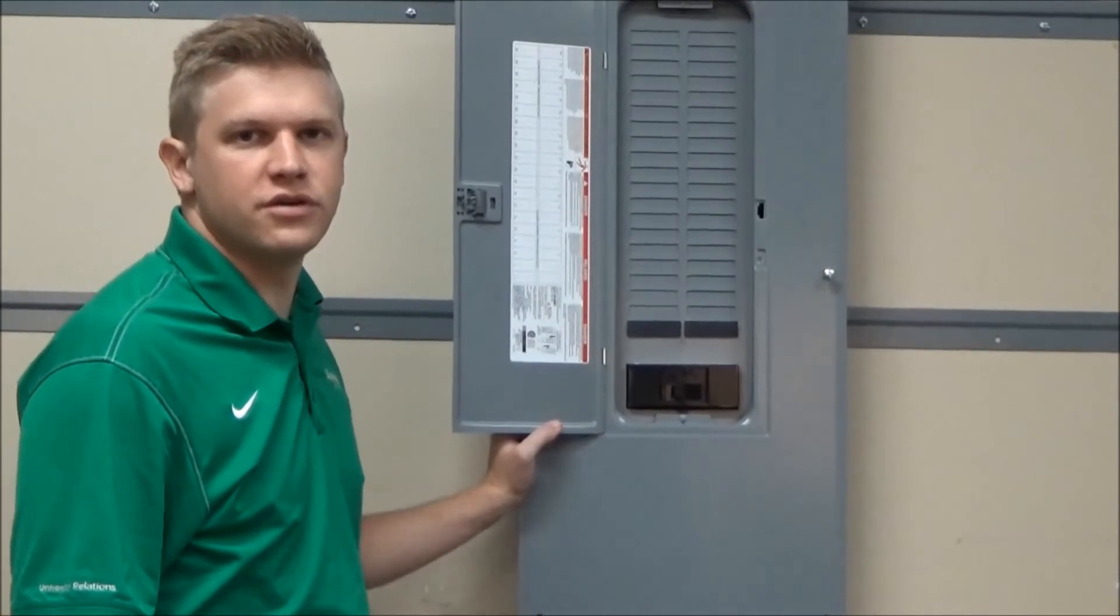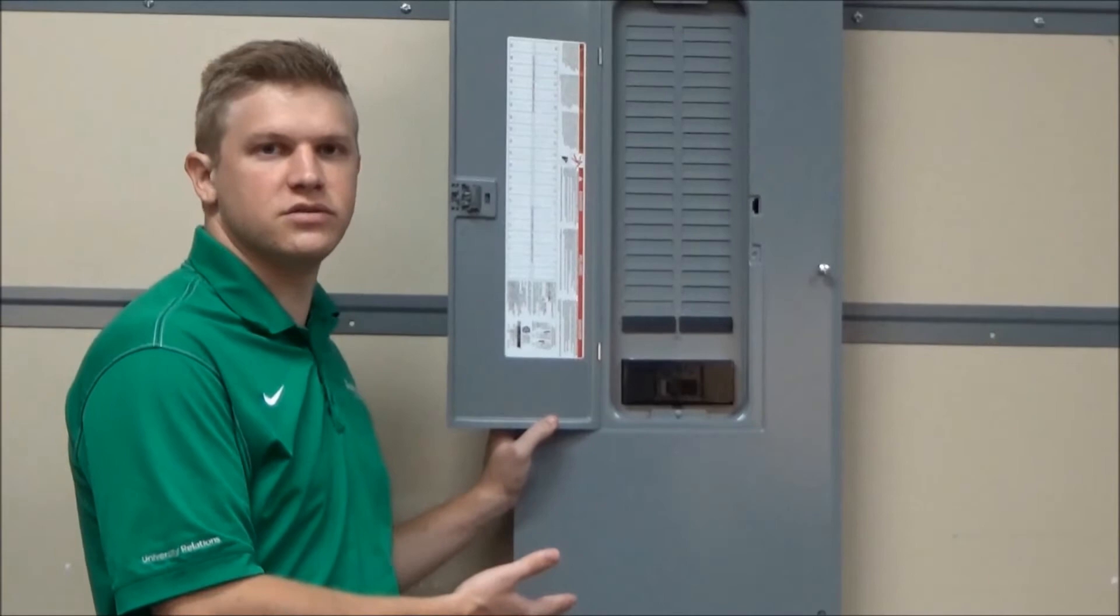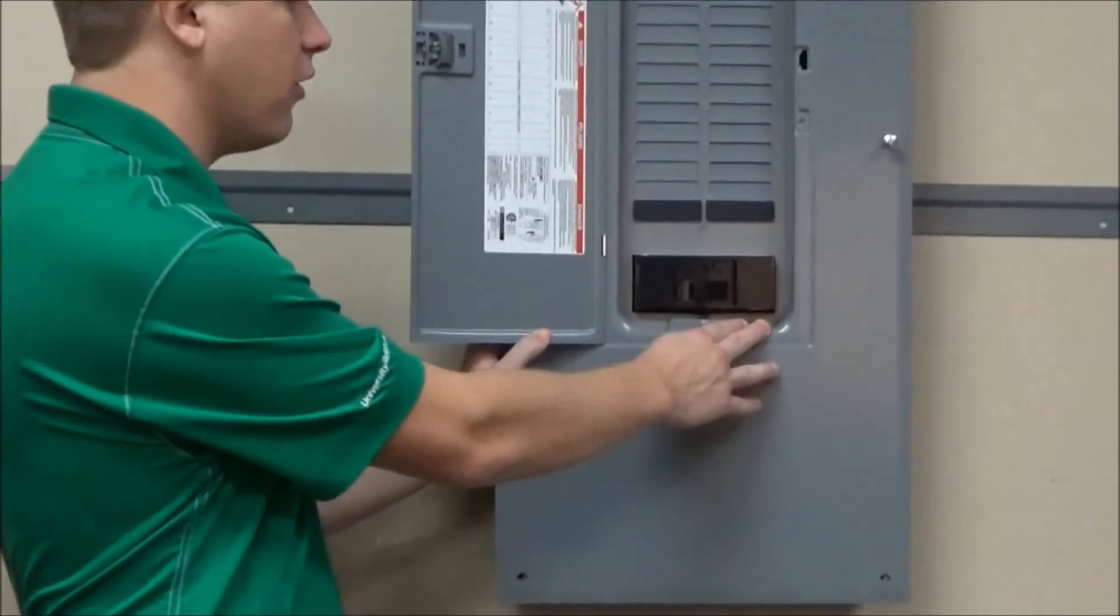Once you have the load center installed, you will also need to rotate the cover 180 degrees so that the main breaker opening is now at the bottom.